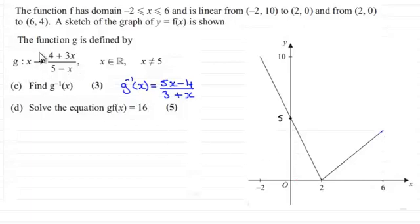And we were also given this function g(x), which was (4 + 3x) / (5 - x). And in part C, we're asked to find the inverse of g(x). And we found out that it was (5x - 4) / (3 + x).